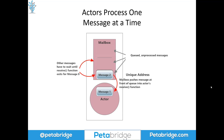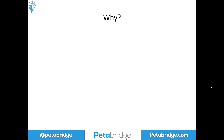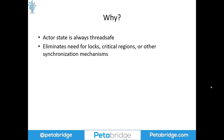We work our way sequentially through the content of our mailbox and process messages in the original order in which they were received. The reason actors are programmed this way is because it guarantees that actor state is always thread safe. If actors can only process one message at a time, multiple messages can't all try to read or write the actor's state concurrently. As a result of being a serial processing entity, we can eliminate the need for locks, critical regions, and other synchronization mechanisms. This is the fundamental reason most developers look at actors in the first place — it makes concurrent programming much easier to reason about.